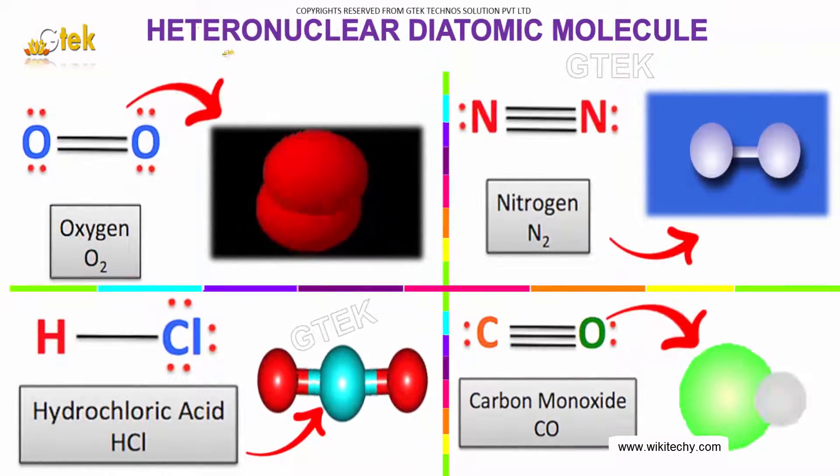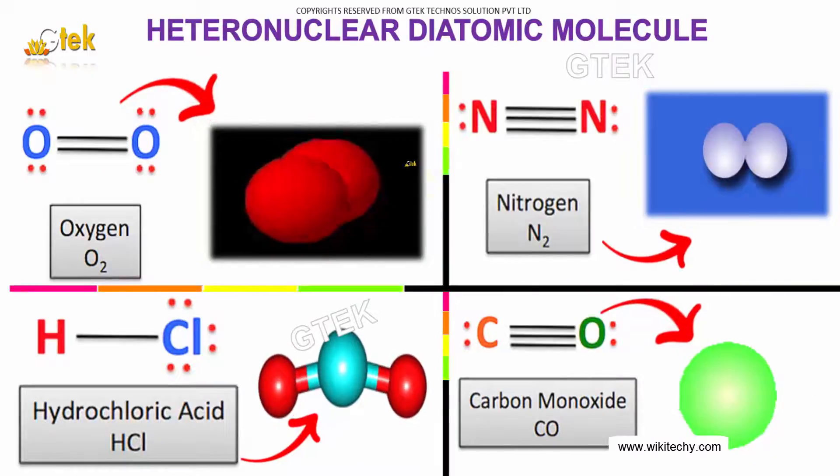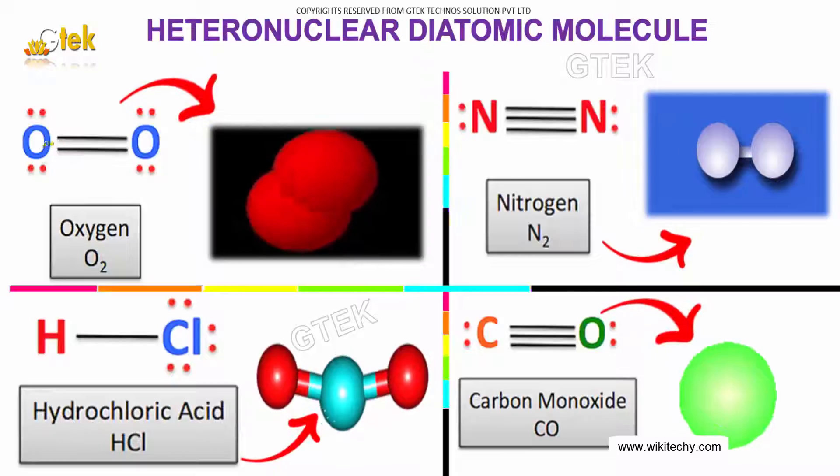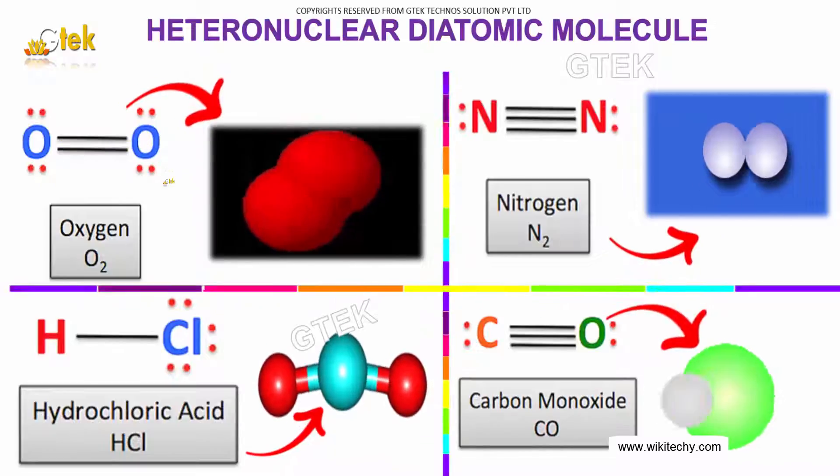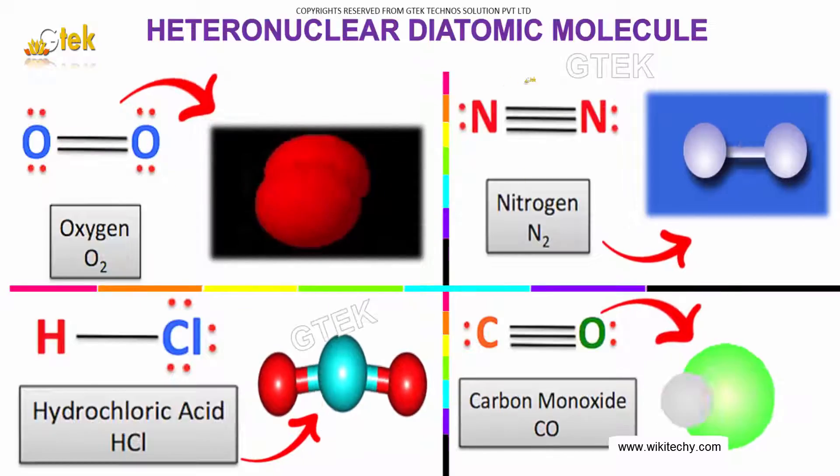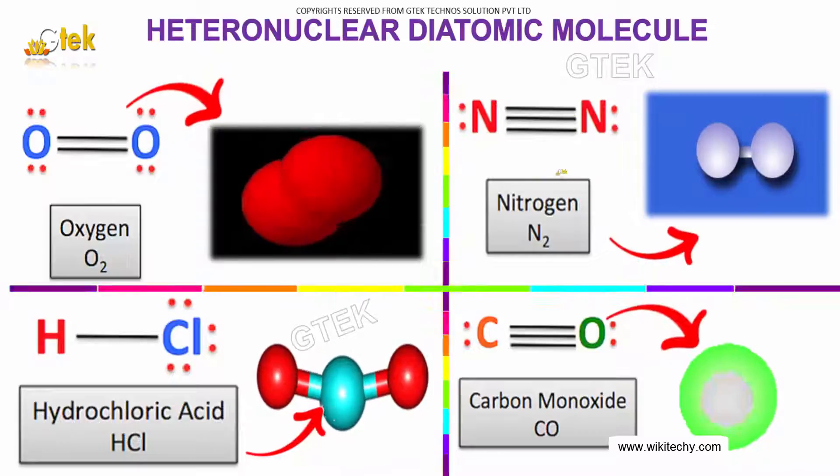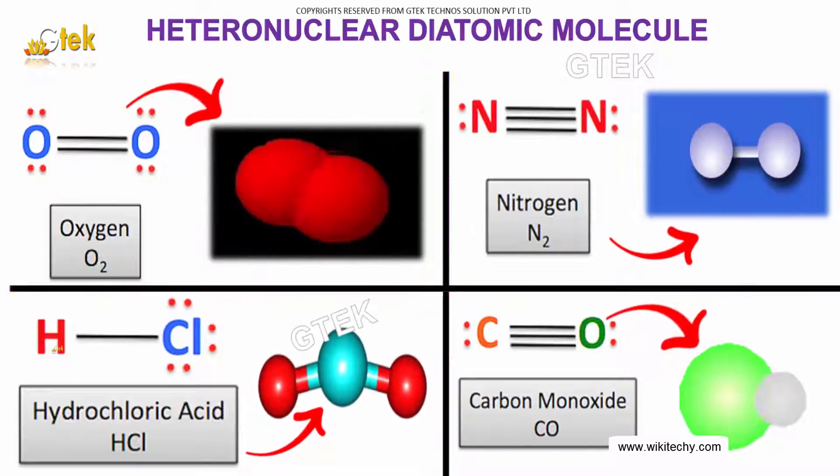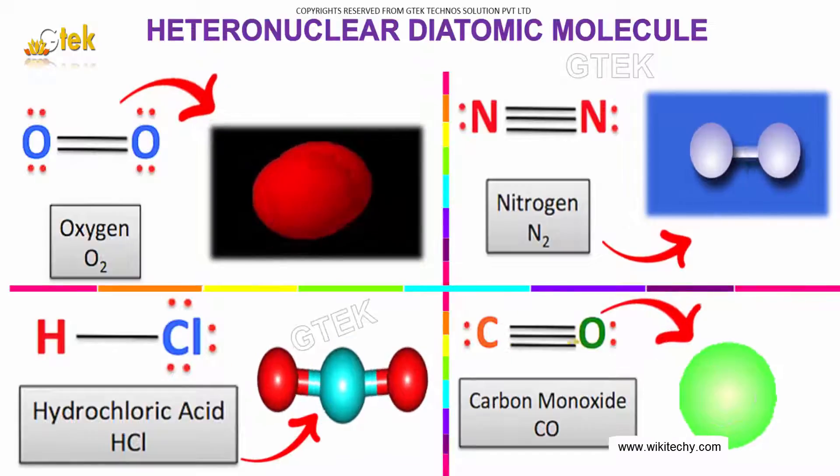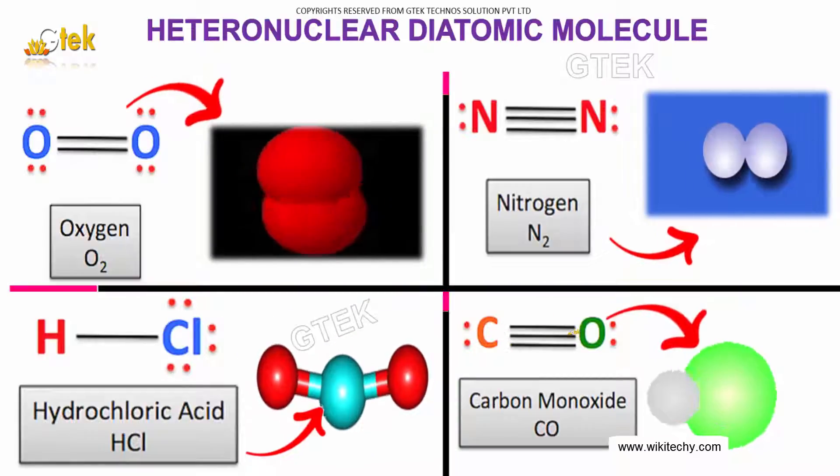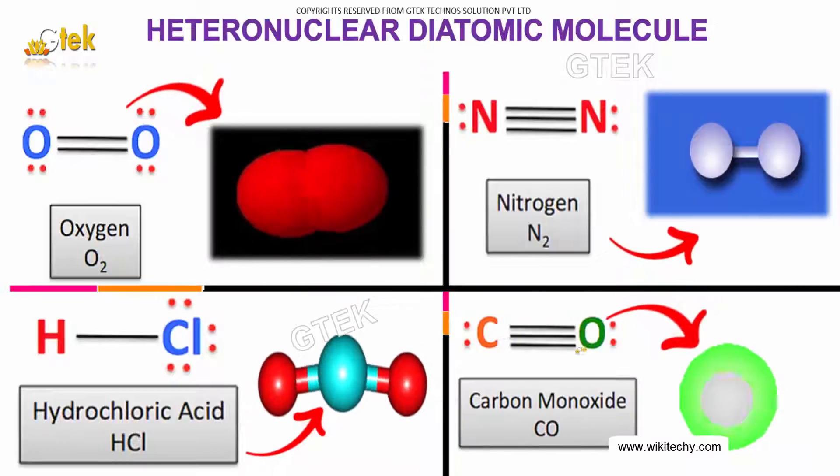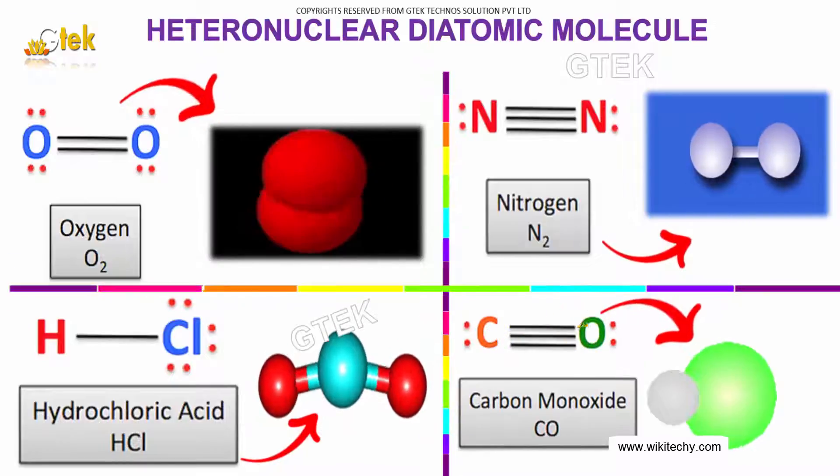You have a heteronuclear diatomic molecule discussion now. You can see this is homonuclear because it's the same molecule. Over here, the same molecule is homonuclear. Over here, this is different, which indicates it is hetero. And here it is different; it is hetero. I am going to talk about the heteronuclear diatomic molecule.